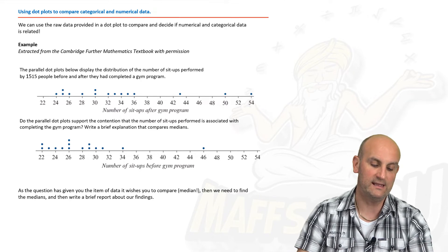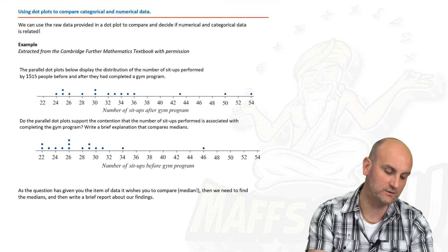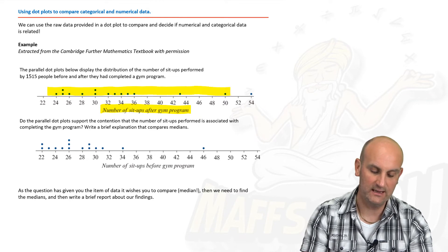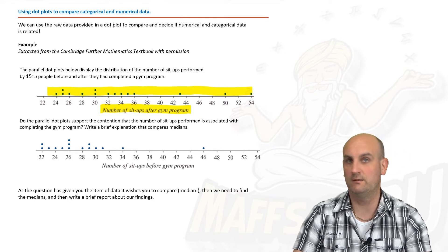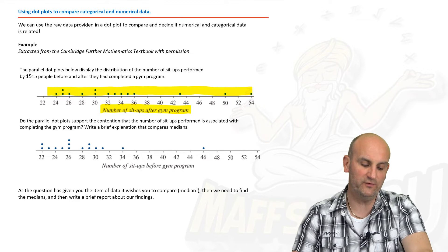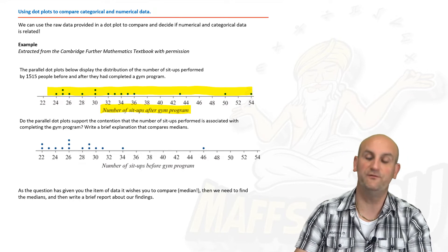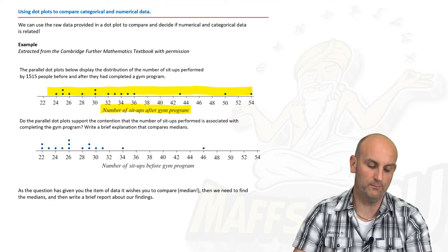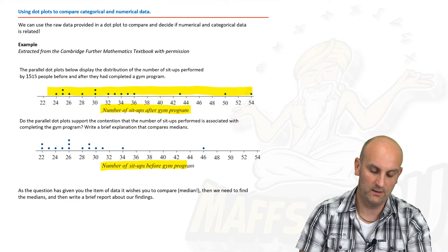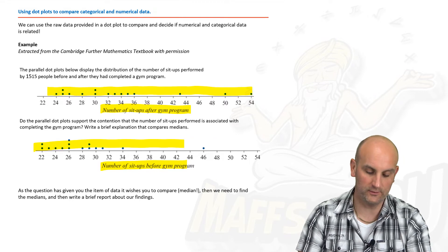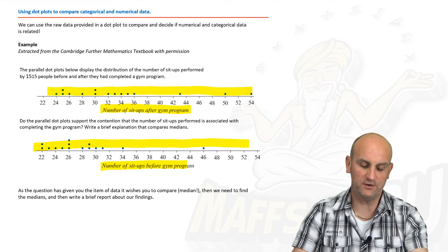What about dot plots? We can compare categorical and numerical data with dot plots as well. Here, the category is the number of sit-ups before or after a gym program. The parallel dot plots display the distribution of the number of sit-ups performed by 15 people before and after they completed a gym program. The question asks you to write a brief explanation comparing medians.